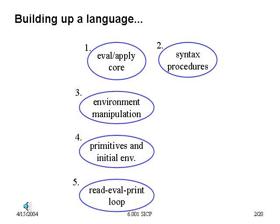To do this, we're going to look at several different parts of the language design. We'll start with the core of eval and apply, then look at how we support the syntax of the language, how we create and manipulate environments that let us look up values associated with that syntax, and then how primitives are installed into the global environment. Finally, we'll put together the overall infrastructure for letting a user interact with the evaluator. There's a code handout that goes with this lecture, and we suggest you print out a copy to follow along.